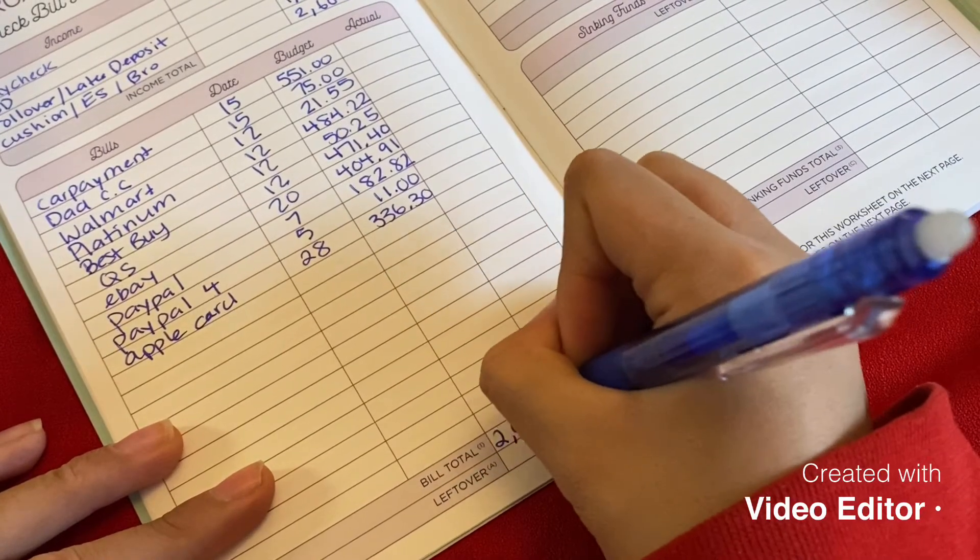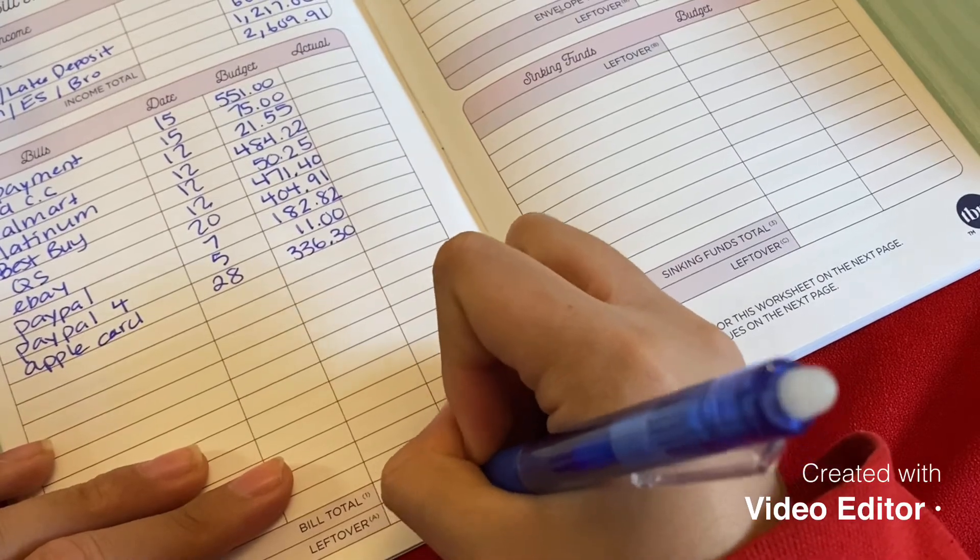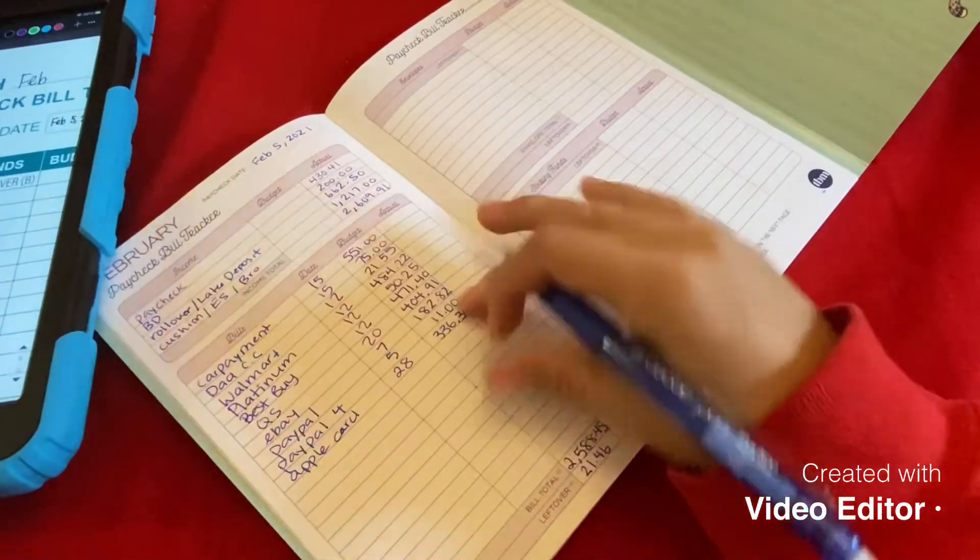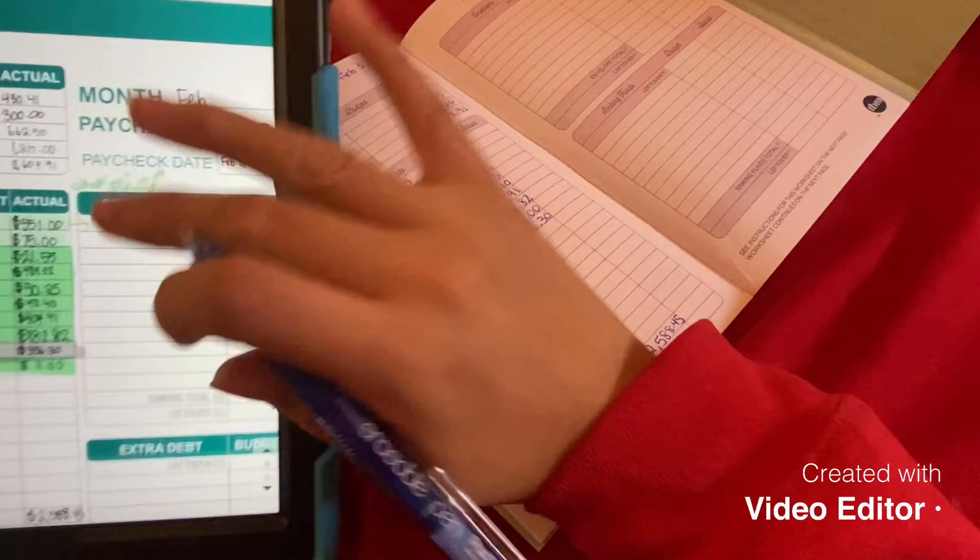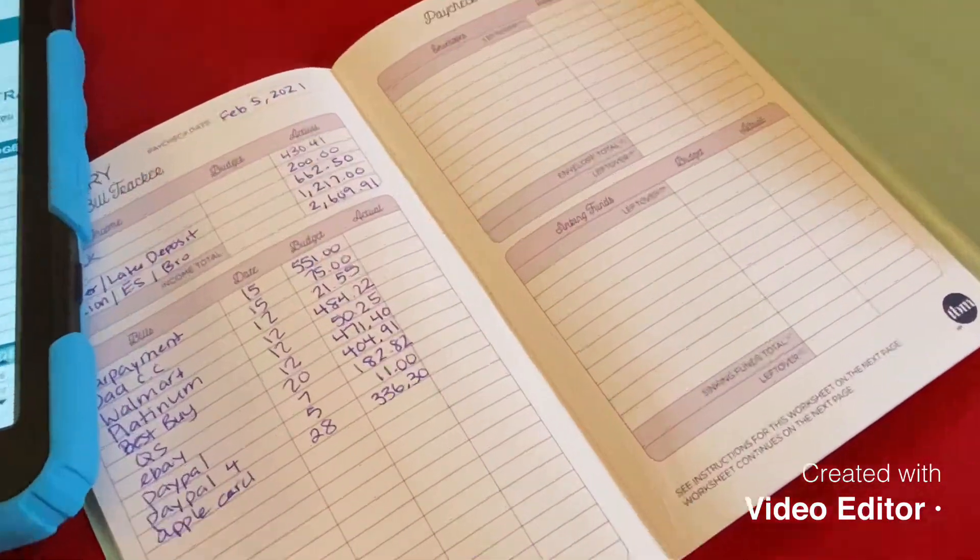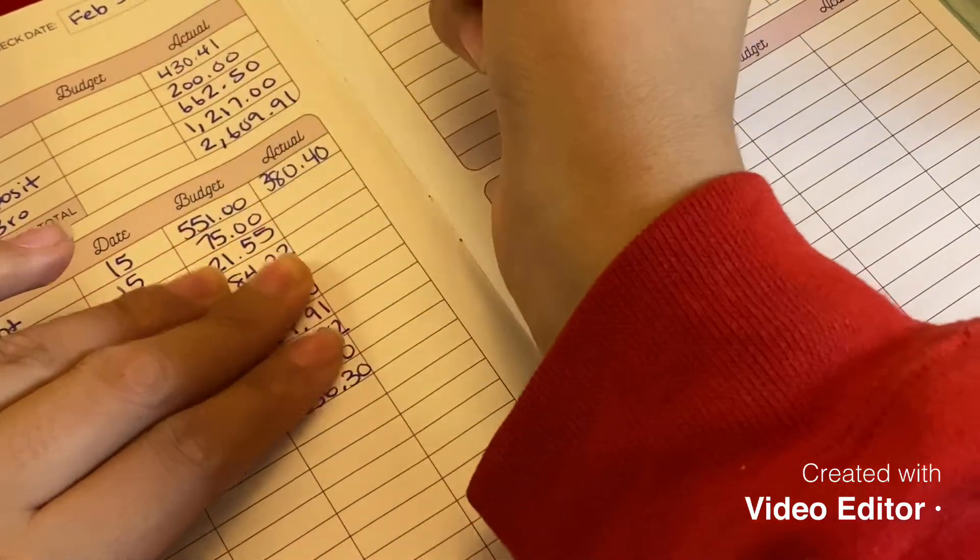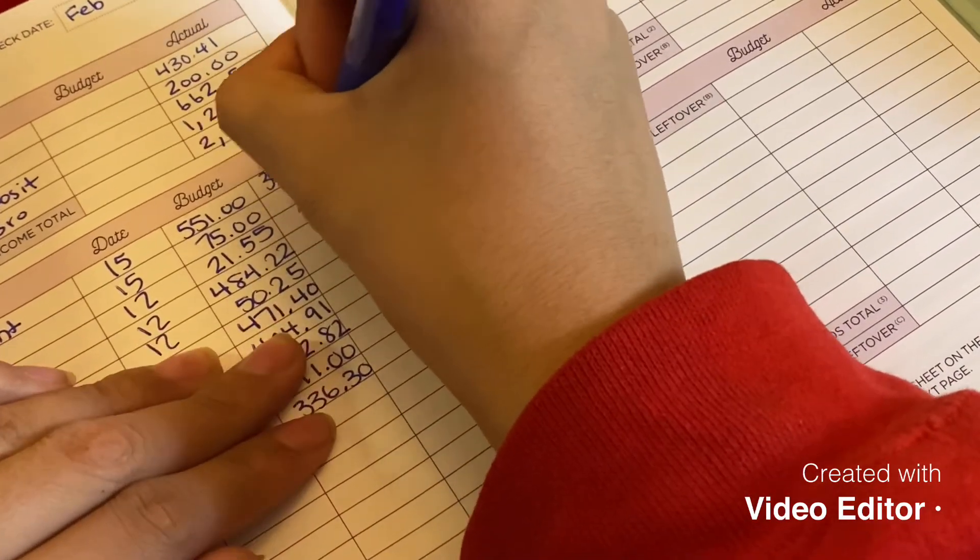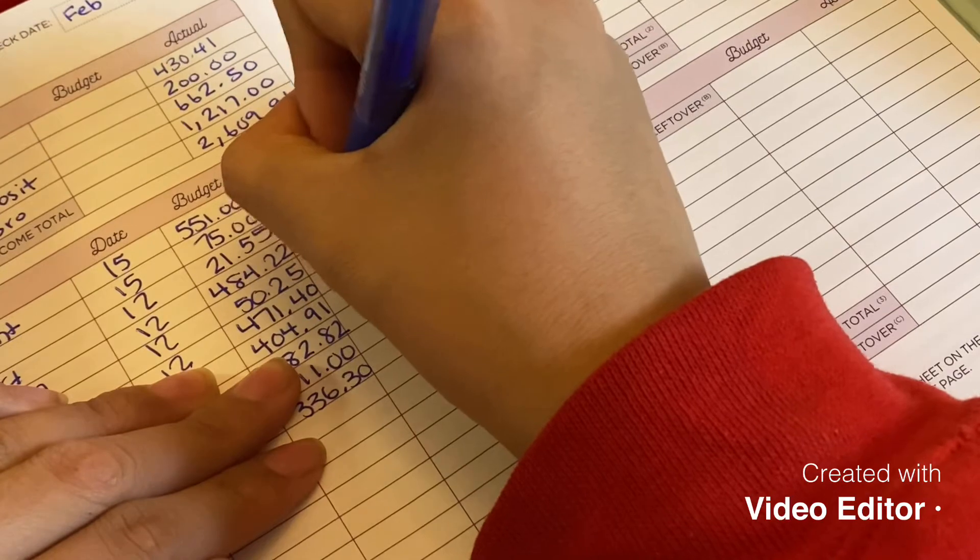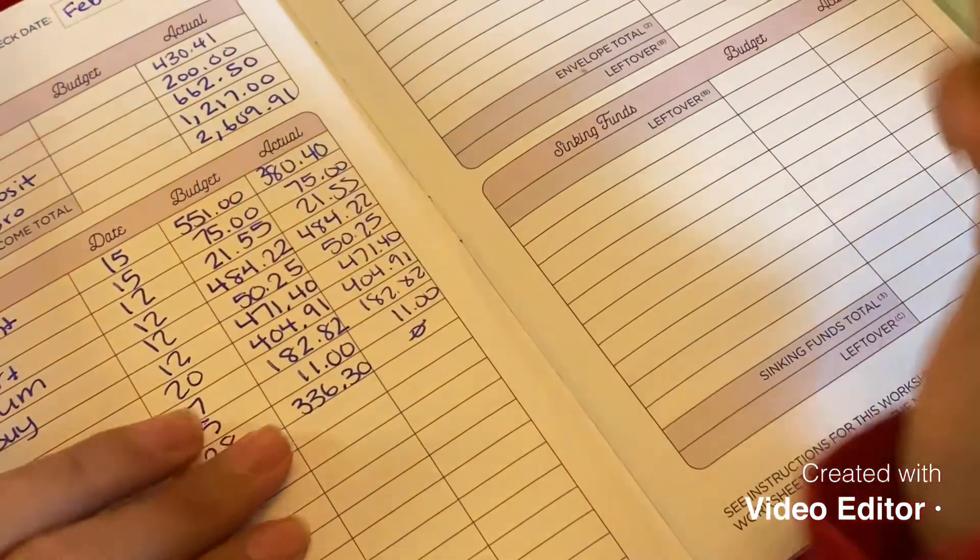And Allstate $11, 336.30. And that all came out to $2,288.45 with the leftover of $321.46. Our payment, my fiancée did get a car so one month was saved. So we did each $380 with 40 cents and I did to the same $521, 528, 422, 50, 25, 471, 40, 491, 182, 82, 11. And then this was zero.